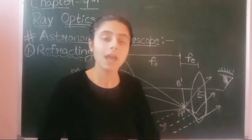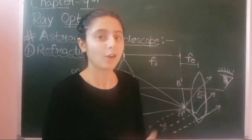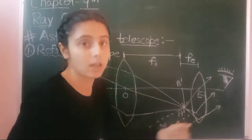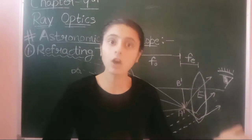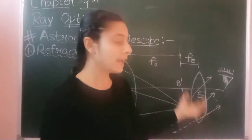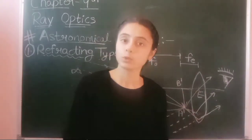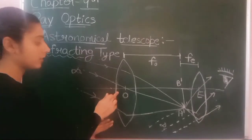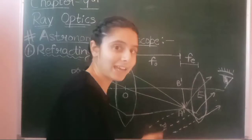Like the compound microscope, there will be two lenses: the objective and the eyepiece. The objective lens is the lens near the object — its aperture is large. The eyepiece is the lens near the eye — its aperture is small. This is the optical center of the objective and this is the optical center of the eyepiece.